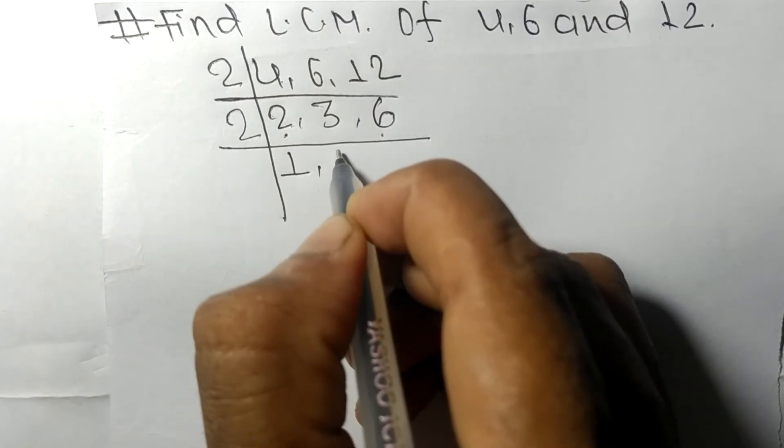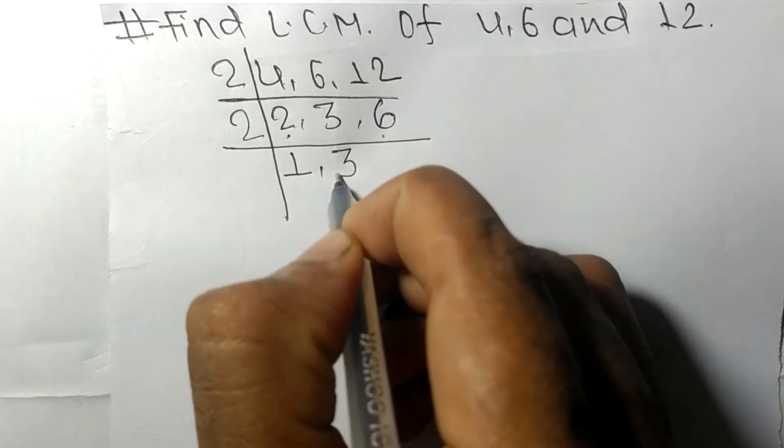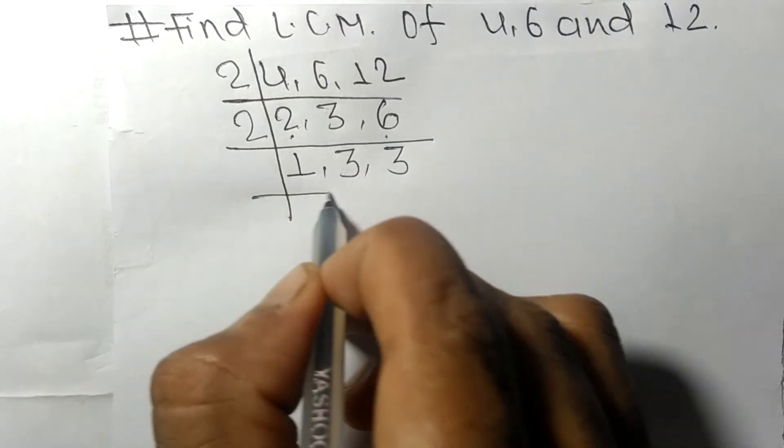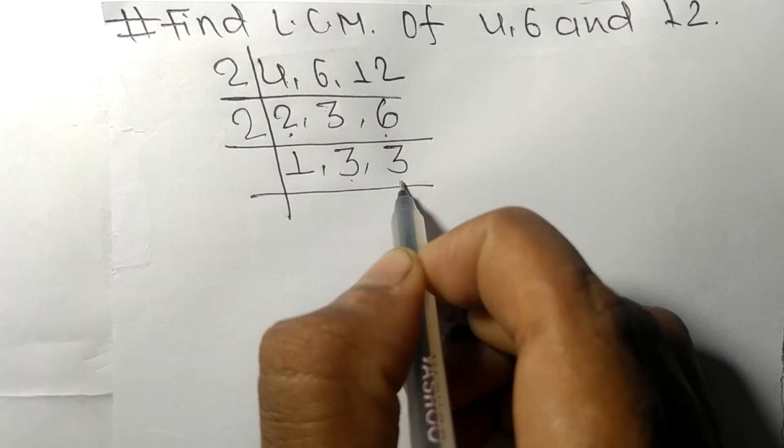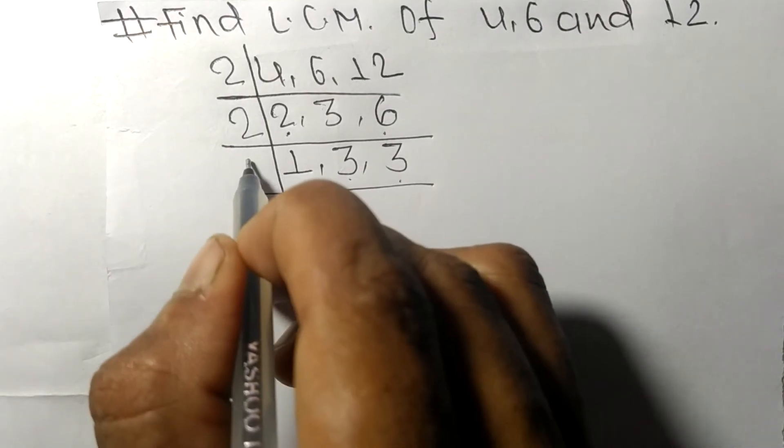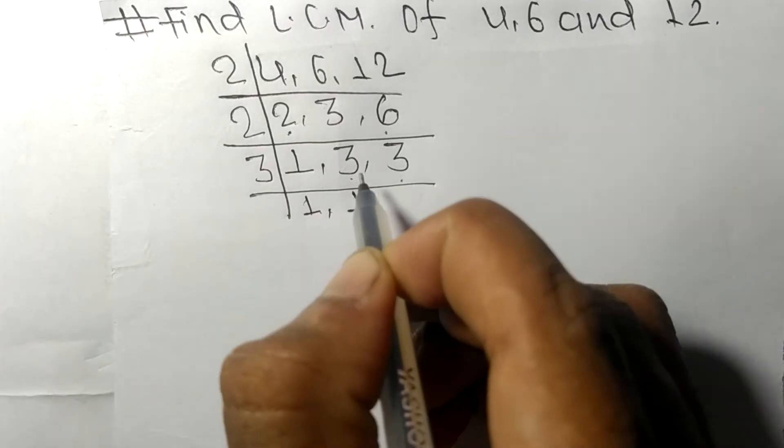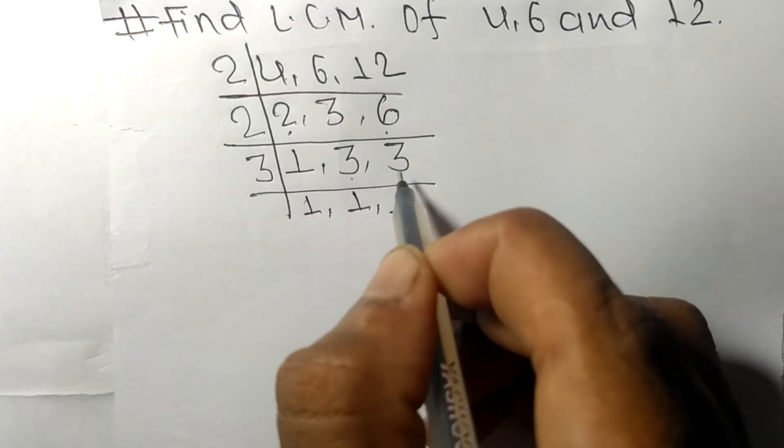So 2 times 1 means 2, 3 is not divisible so stays as it is, 2 times 3 means 6. Now we have 1, 3, and 3, which are exactly divisible by 3. 1 stays as it is, 3 times 1 means 3, 3 times 1 means 3.